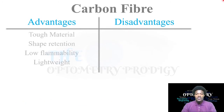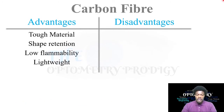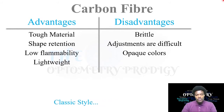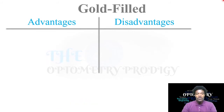Carbon fiber — the advantages are that it is a tough material with shape retention: once a force is applied and removed, it returns to its normal shape. It has low flammability and is lightweight. The disadvantages are that it is brittle, adjustments are difficult to make, and colors are usually opaque — it doesn't typically have transparent colors. However, it gives a classic style look, as you can see with carbon fiber frames.